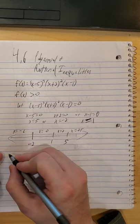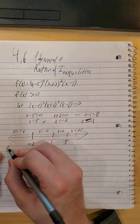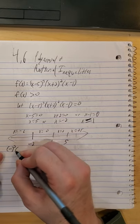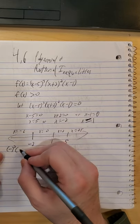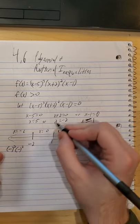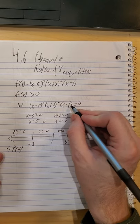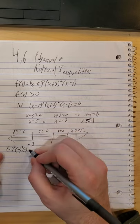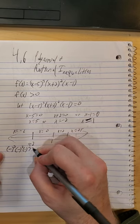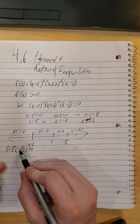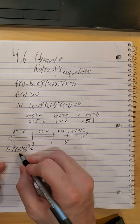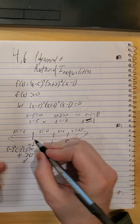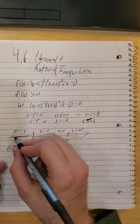So at negative 6, we have negative 6 minus 5, that is a negative, and we are cubing it. Negative 6 plus 2 is a negative and we're squaring that negative. Negative 6 minus 1 is a negative. And we want to know, is this then greater than 0? I have 3, 4, 5, 6 negatives. Even number of negatives multiplied together is positive. Positive is always greater than 0, so we get to keep this.